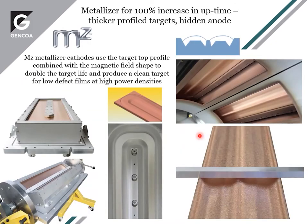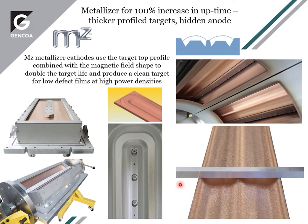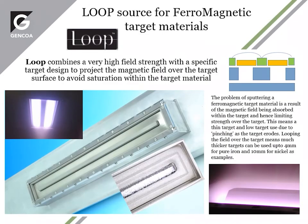Metalizer magnetrons are used for machinable materials — they combine the magnetic geometry with a contoured target geometry. If a target can be machined, you can marry up the two aspects to produce a much thicker target and much higher uptime. We can double the target life using this method, produce much thicker targets, encourage high target use, and also prevent coating of the anode by hiding it behind the edge of the target. Metalizer designs are very useful for rapidly depositing metals on surfaces.